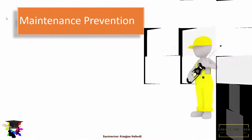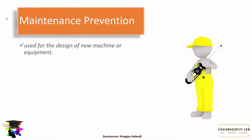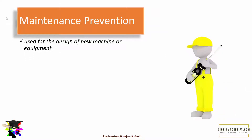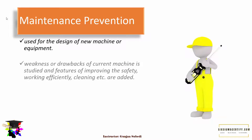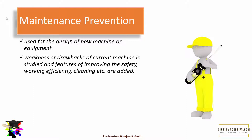The last type is maintenance prevention, which is basically used for the design of new machines or equipment. For this, the weaknesses or drawbacks of the current machine are studied, and features improving safety, working efficiency, and making it easier for future cleaning and maintenance are added to the new machine.